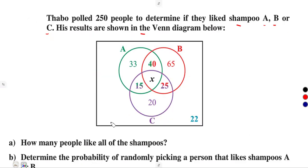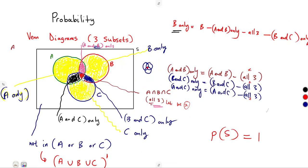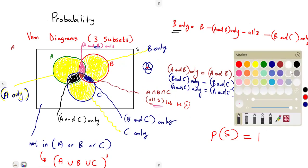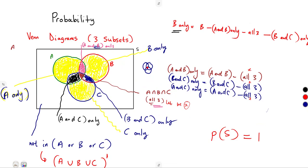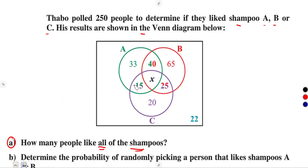Part A asks: how many people like all three shampoos — A, B, and C? Remember, all three means the intersection — the intersection of A, B, and C — which is given in the diagram as X. So the question is simply: find X. Calculate the value of X.